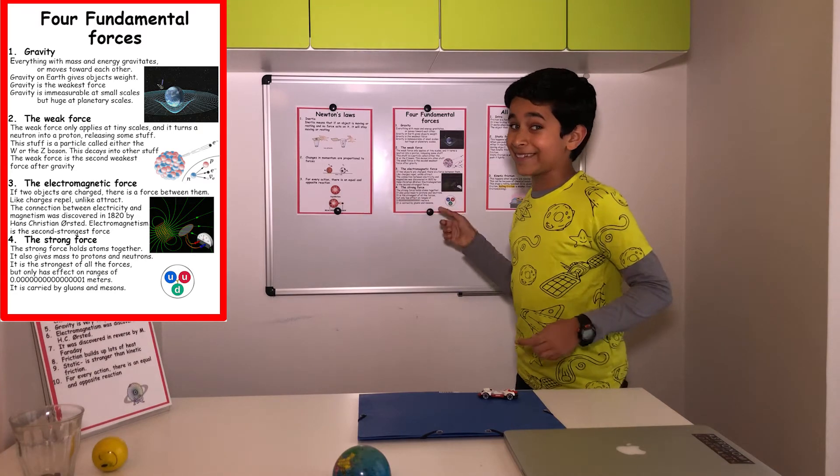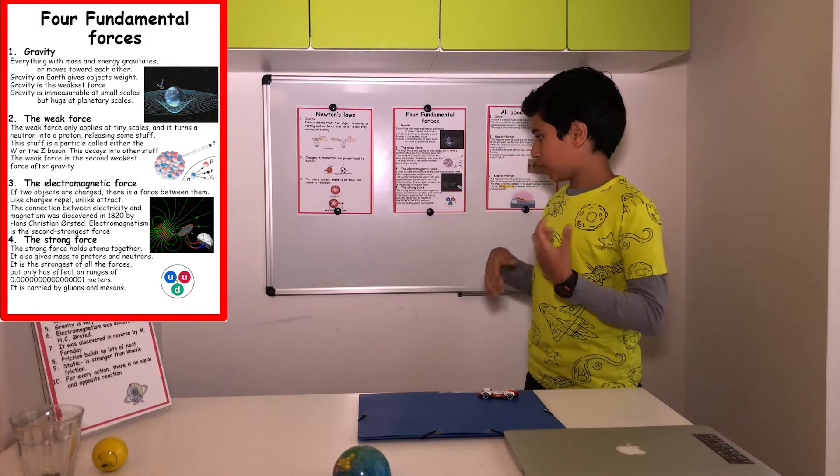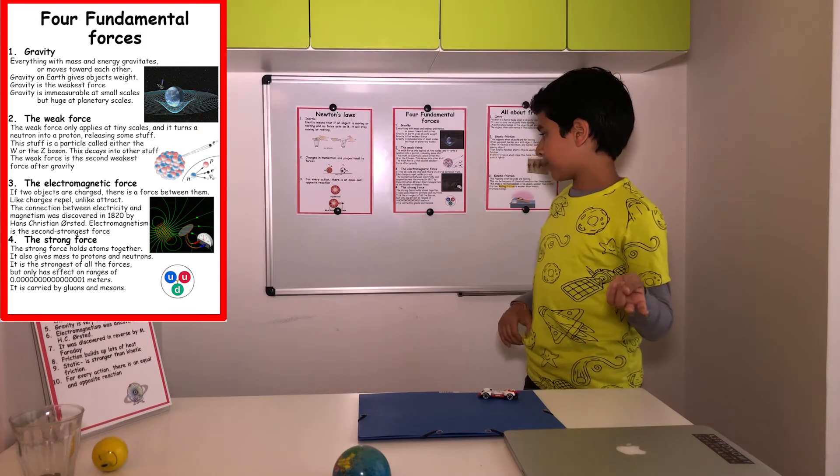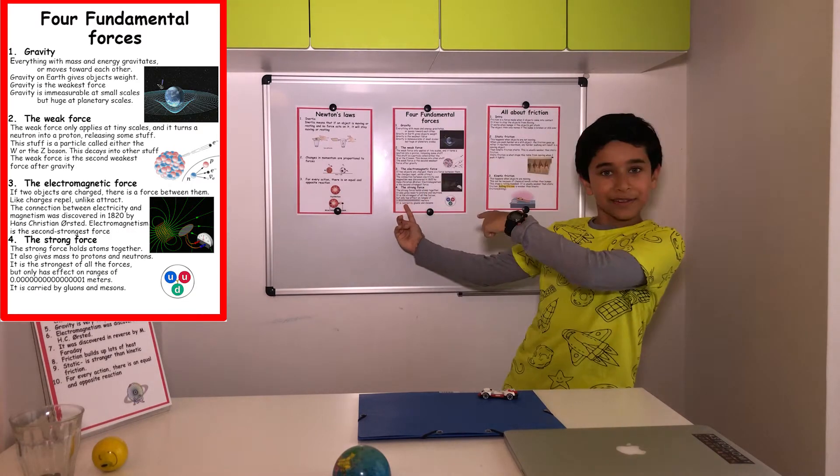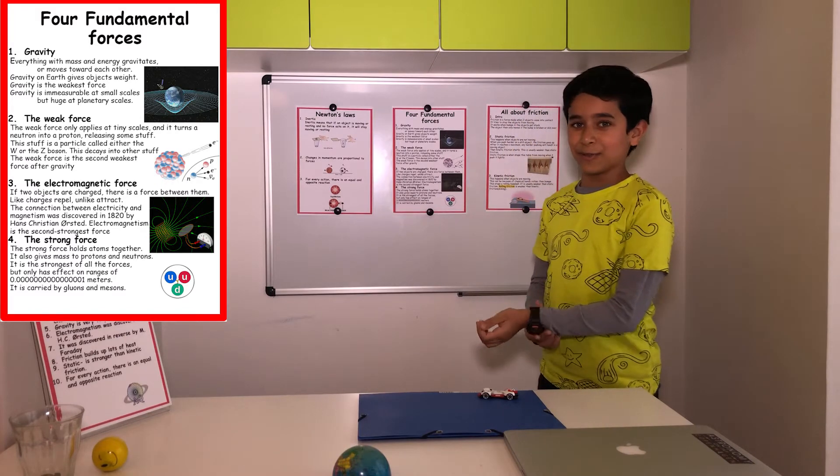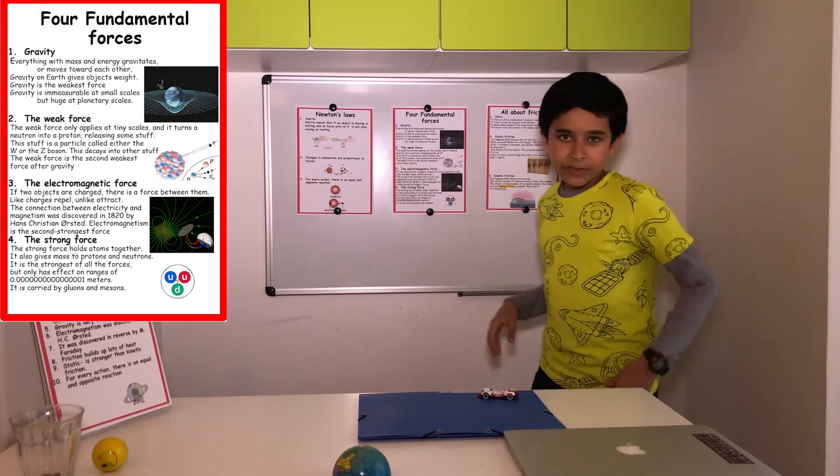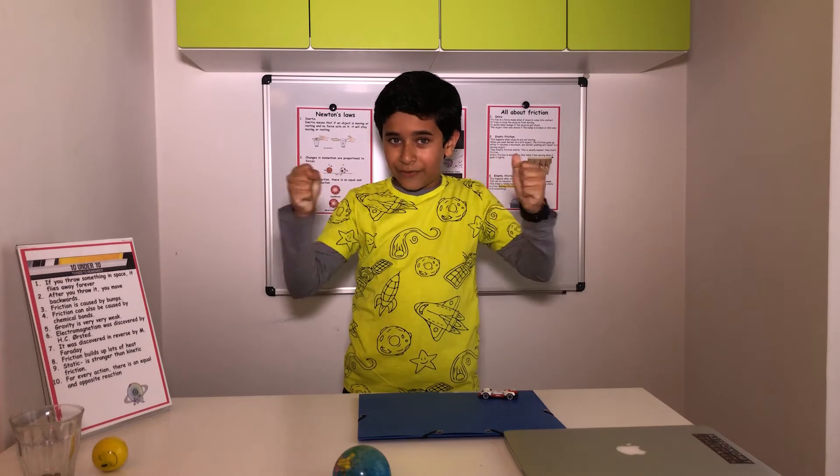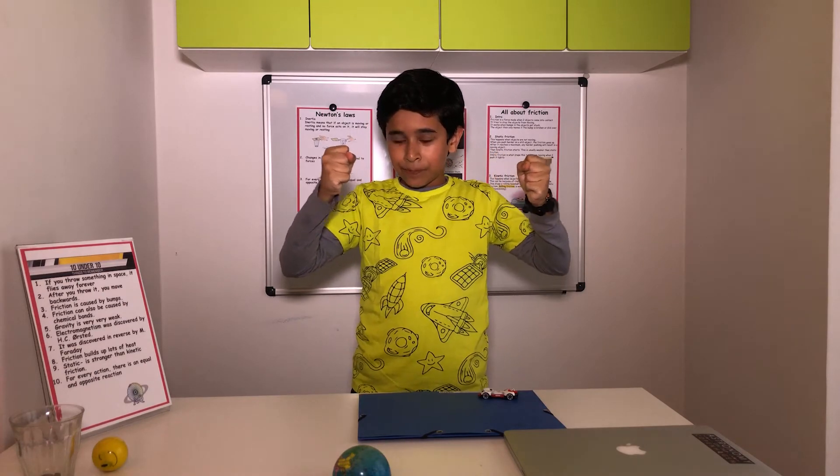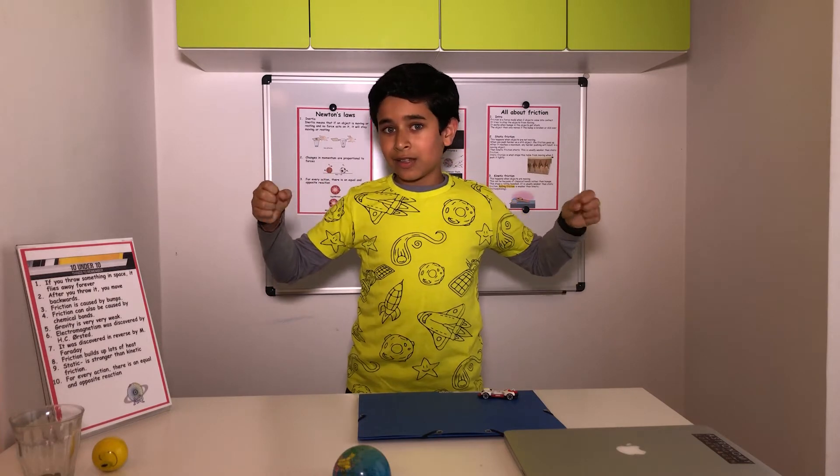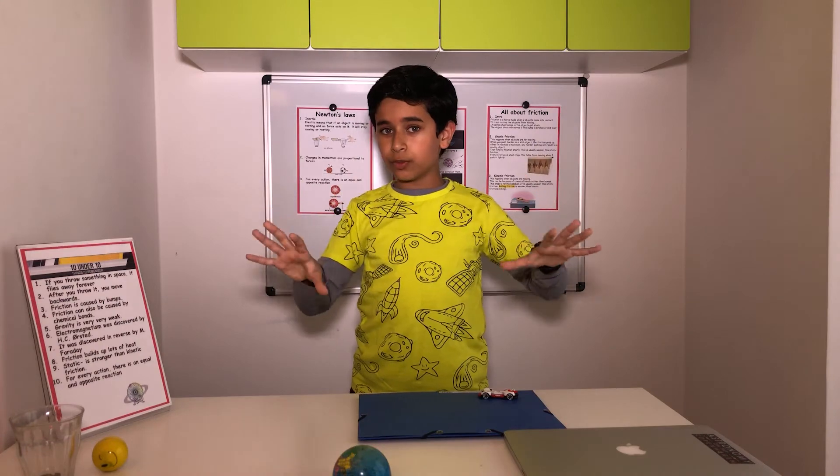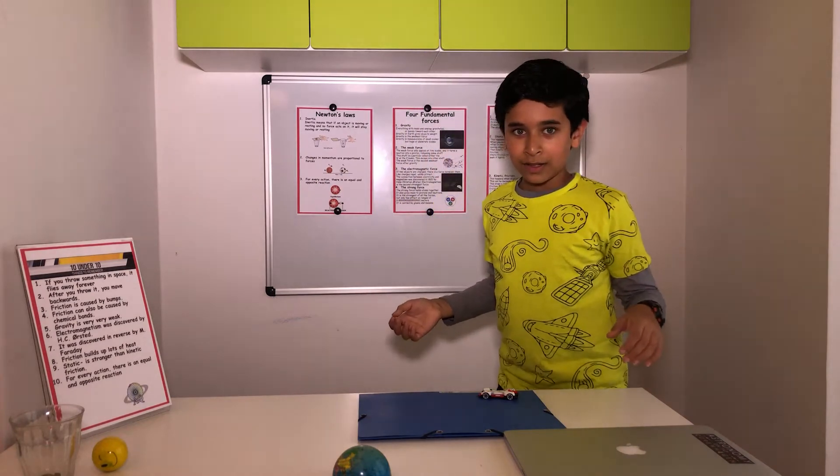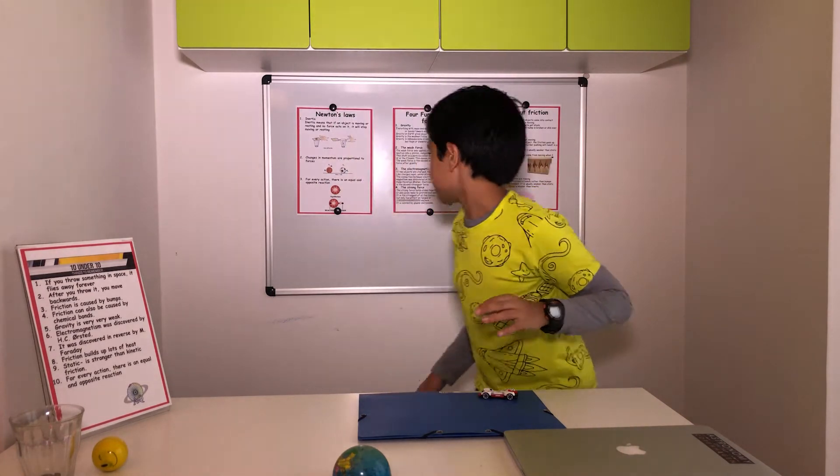Four, the strong force. That's actually what it's called. The strong force holds atoms together. It also gives mass to protons and neutrons. It's the strongest of all the forces. But it only has effect on ranges of 0... this number of meters. It's carried by gluons and mesons, which are some other particles. So basically, if you have two quarks, those are some particles, and you try to pull them apart, then it's a very strong force trying to keep them together. But if you pull enough, then the rubber band will snap and will create two more quarks because of the energy you put in. And then you'll have two pairs of quarks. And you'll be no farther in your attempt to pull them apart.